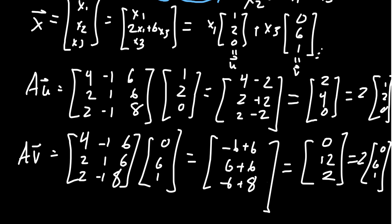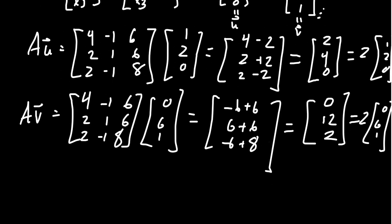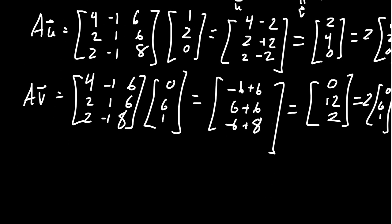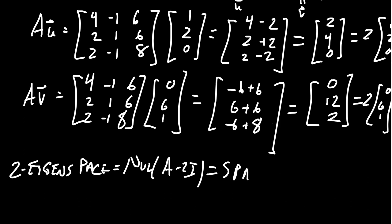In conclusion, we've now found our 2 eigenspace. Our 2 eigenspace of A, this is the null space of A minus 2I. As we've seen, the null space is the span of these two vectors [1,2,0] and [0,6,1]. In particular, our basis we found right here.